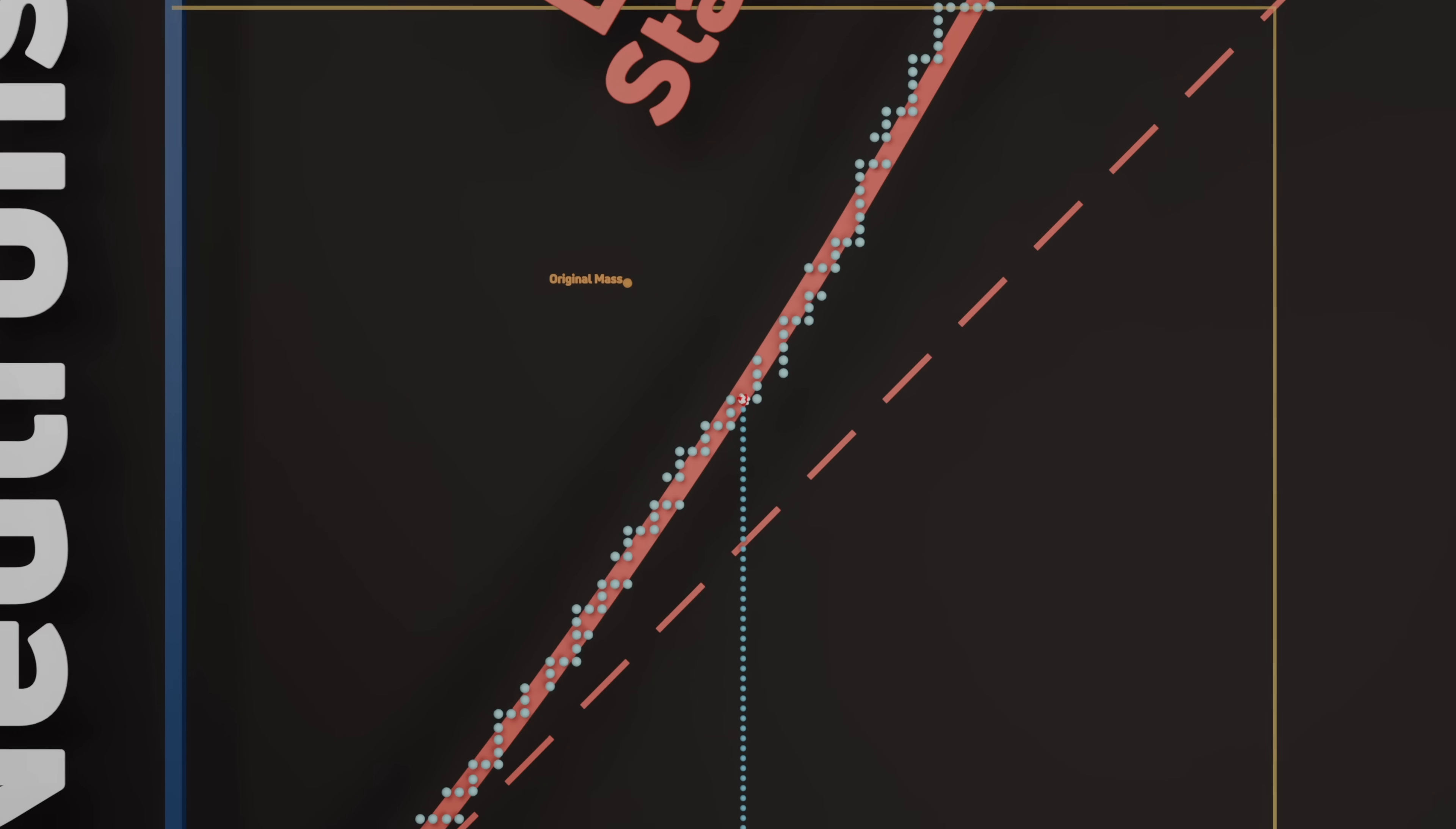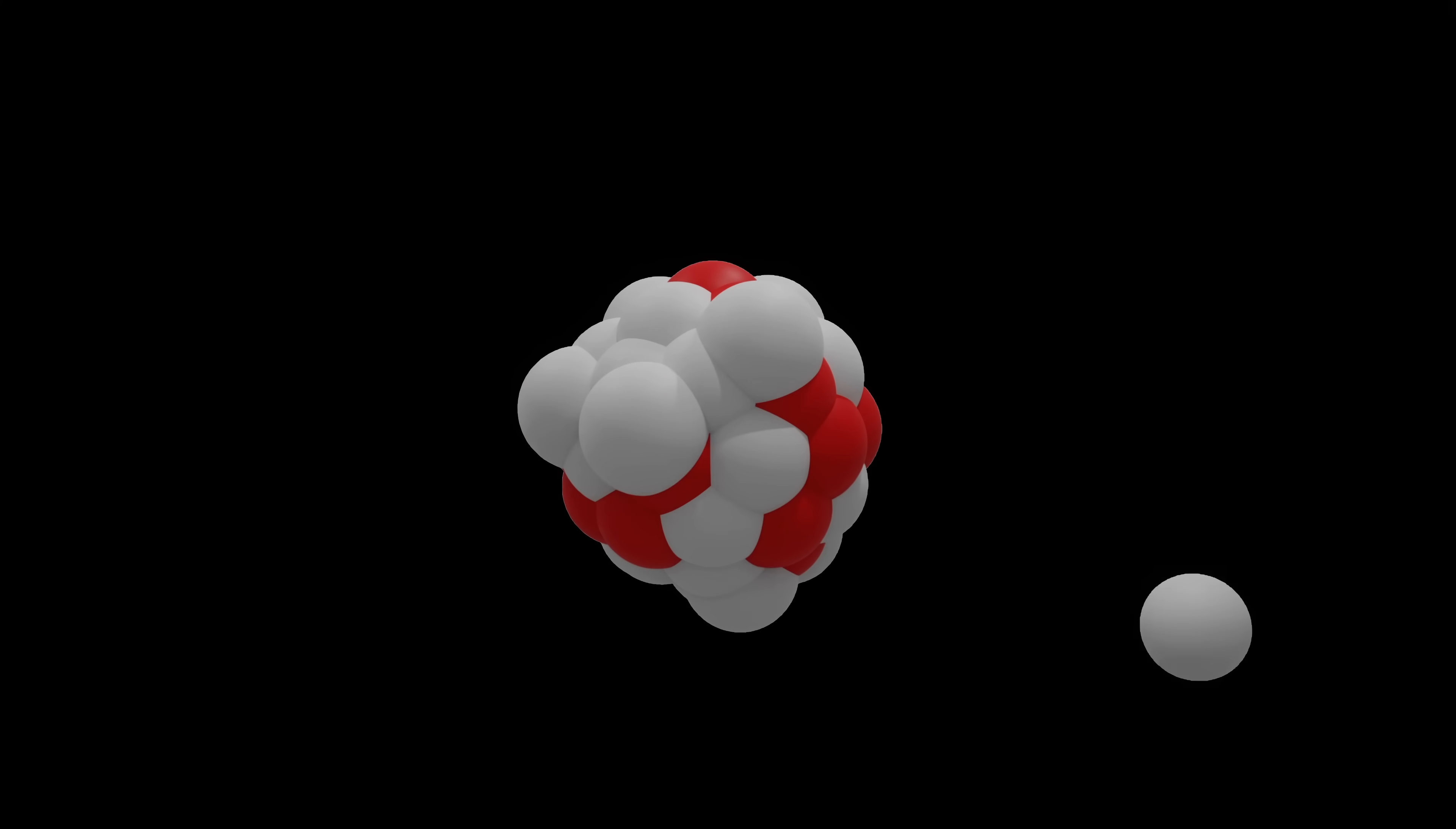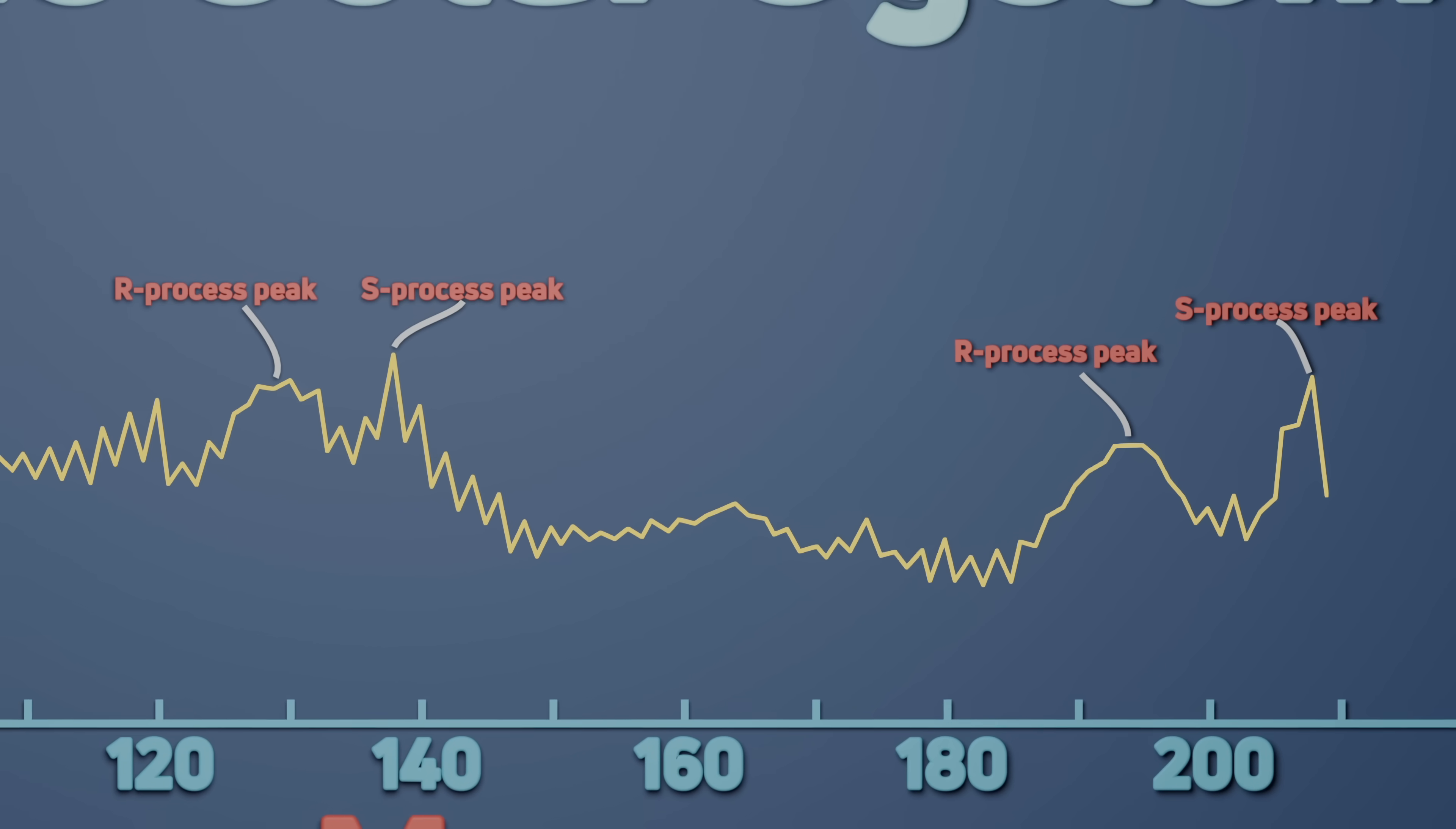Slow process neutrons will build up until reaching a magic number, at which point it gets harder to add another. This is seen in the isotopic abundance of the elements in the solar system. R process neutrons also do this, but because they have less protons than nuclei built with the S-process, they have less mass and so their peaks are to the left of the S-process peaks.